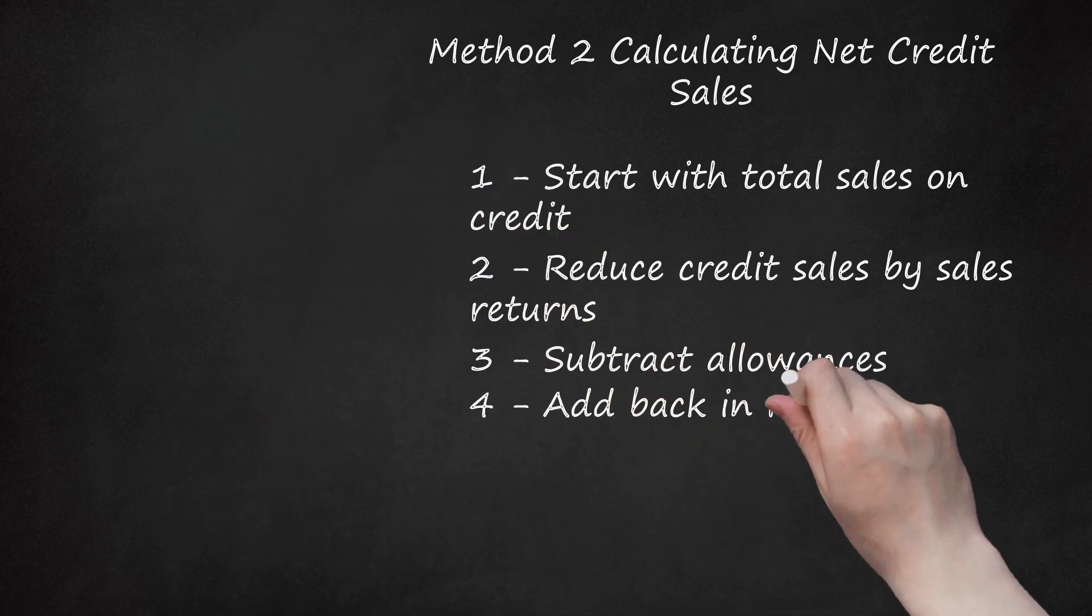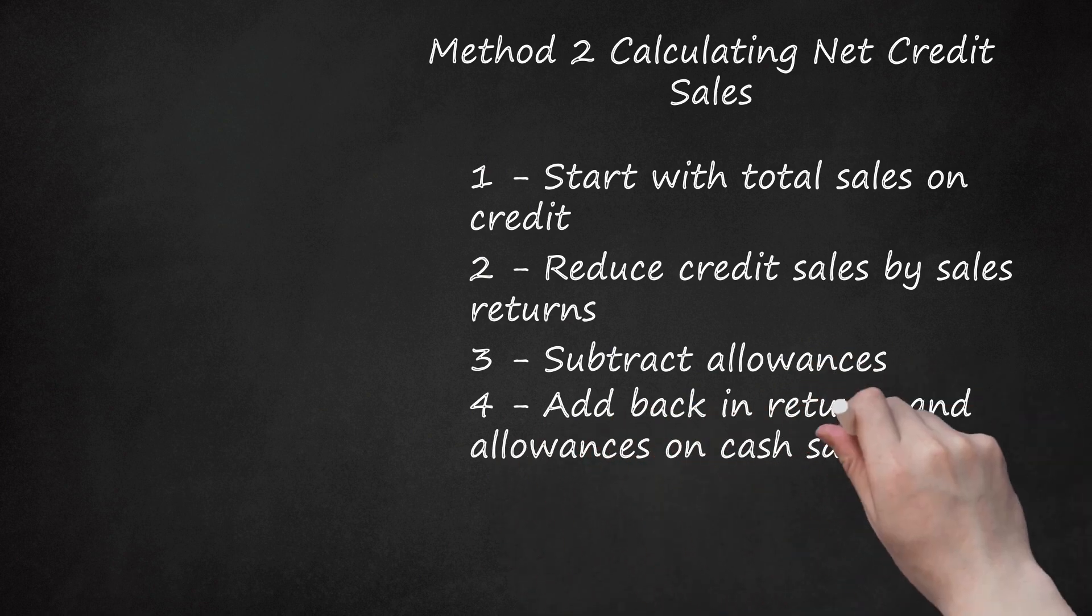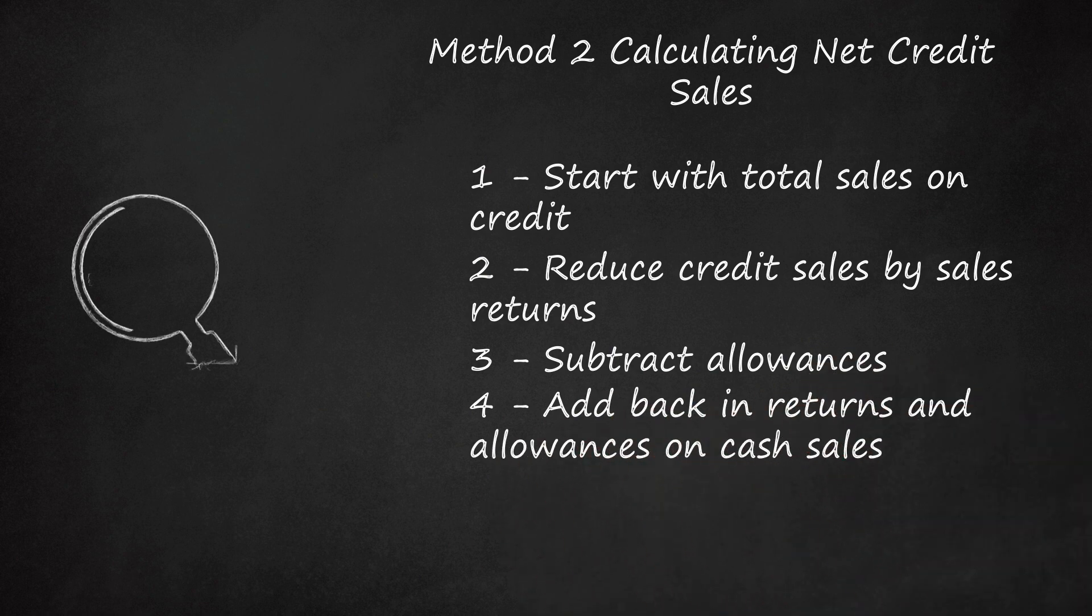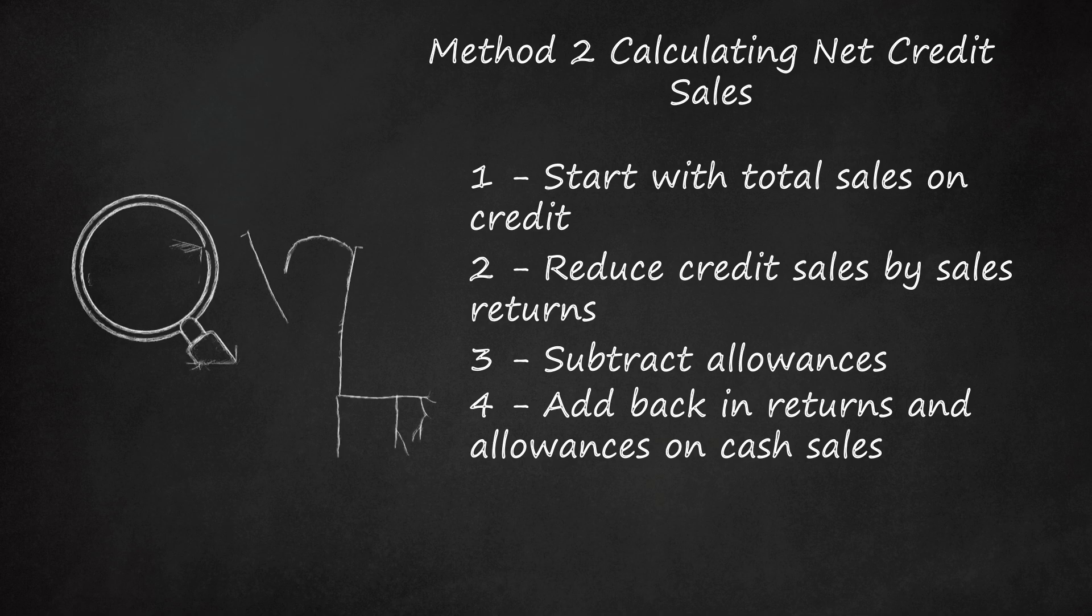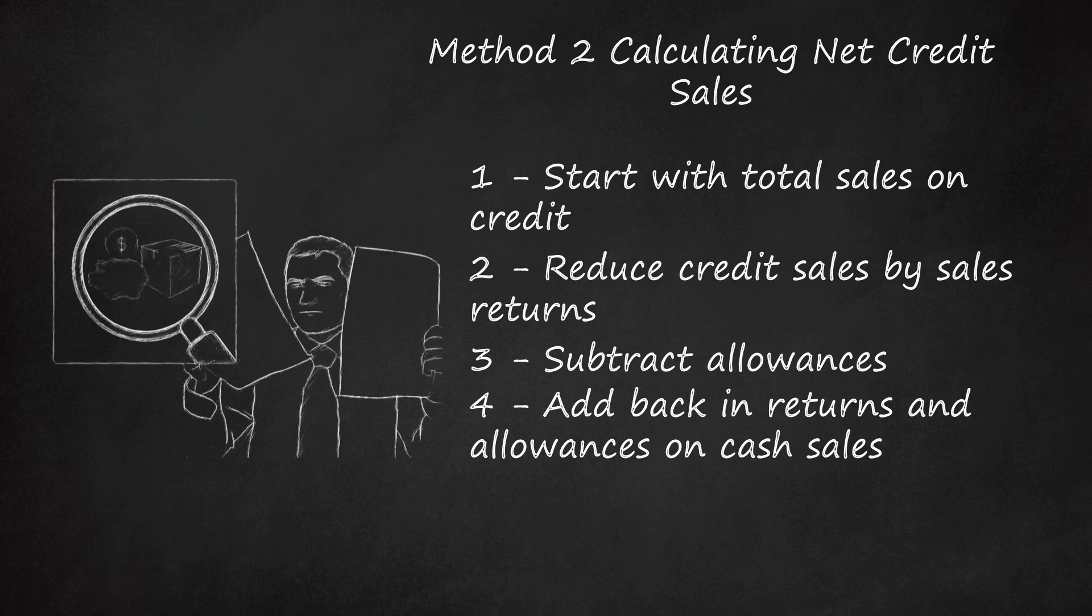Add back in returns and allowances on cash sales. The reductions made on net credit sales up to this point should have only been those returns and allowances made on credit sales. The best way to ensure accuracy in these calculations is to keep these accounts for credit sales separate from those for cash sales. However, many businesses do not keep these accounts separate. Go back and look at your values for returns and allowances and identify any additions that were related to cash sales rather than credit sales. You will then have to add the value of these sales back into your total.